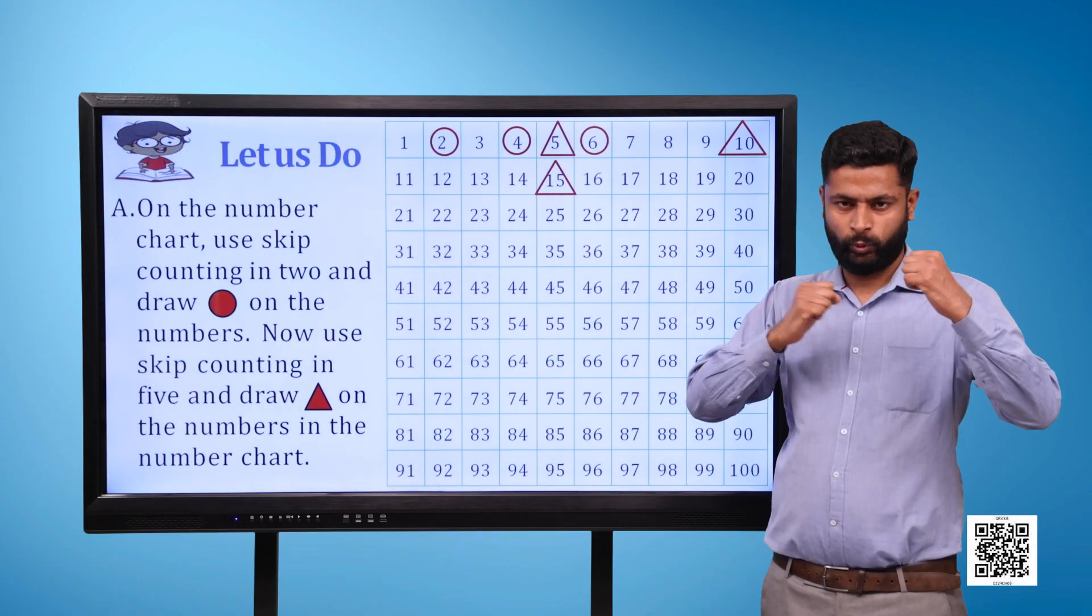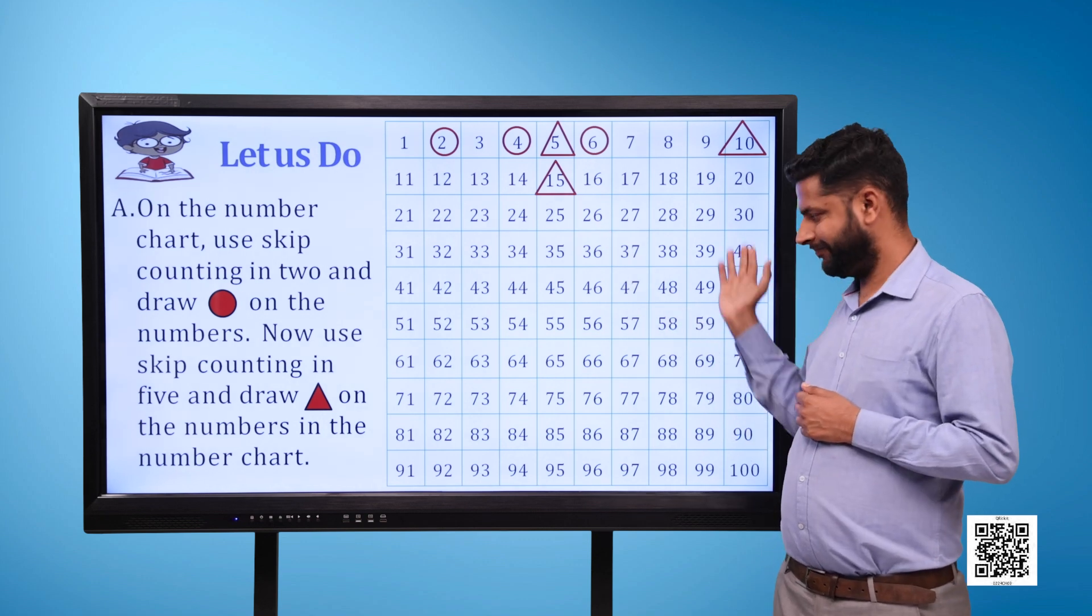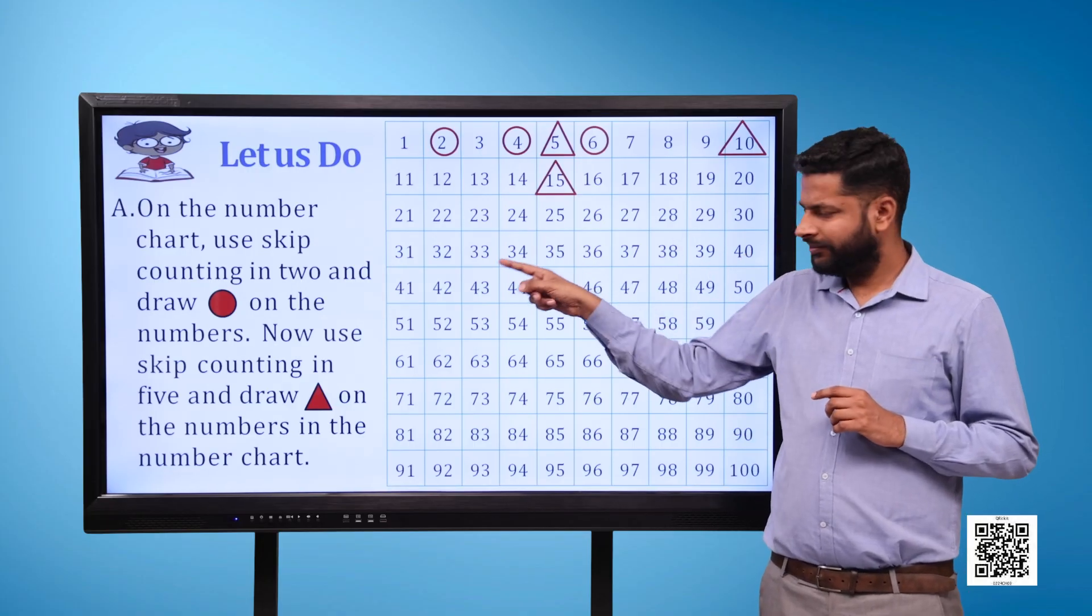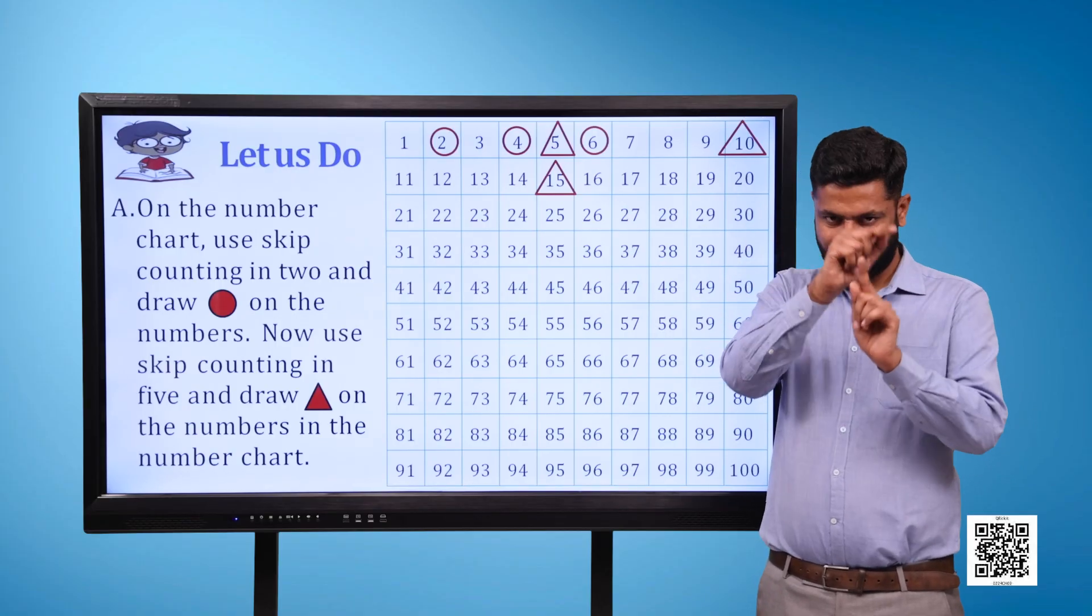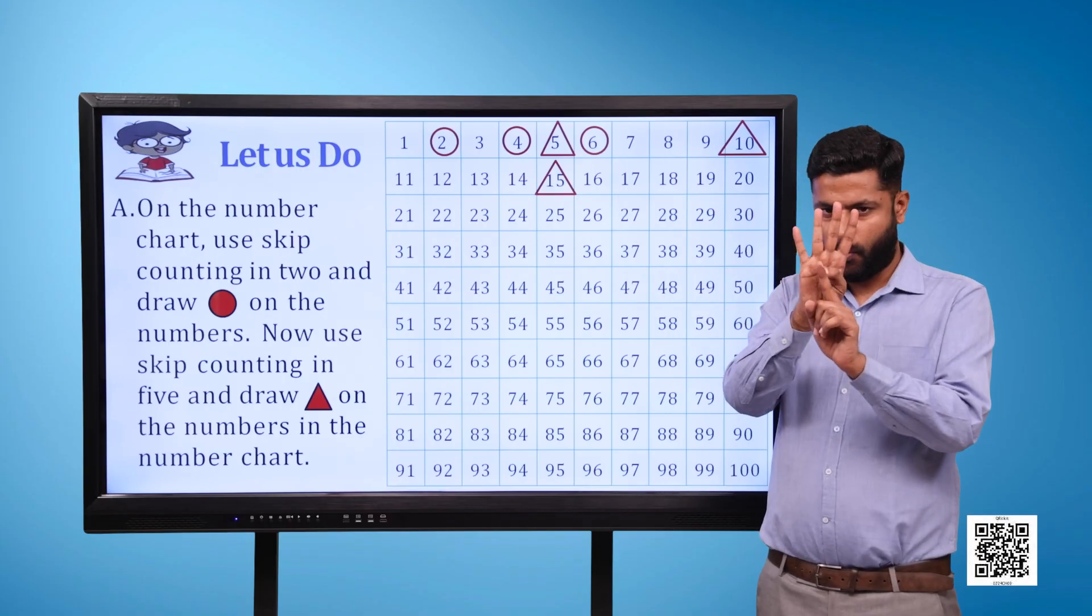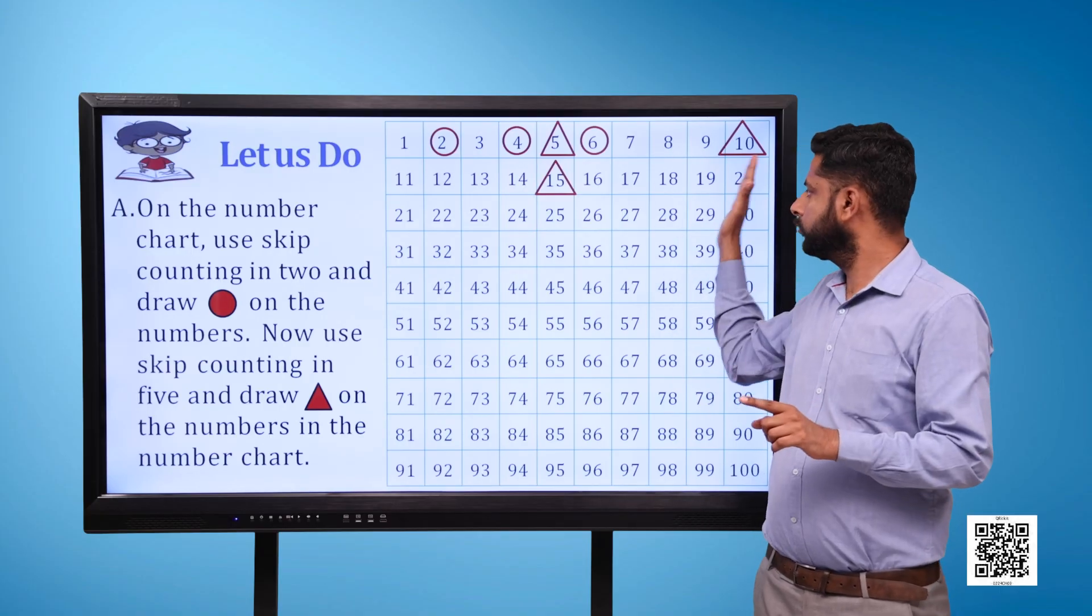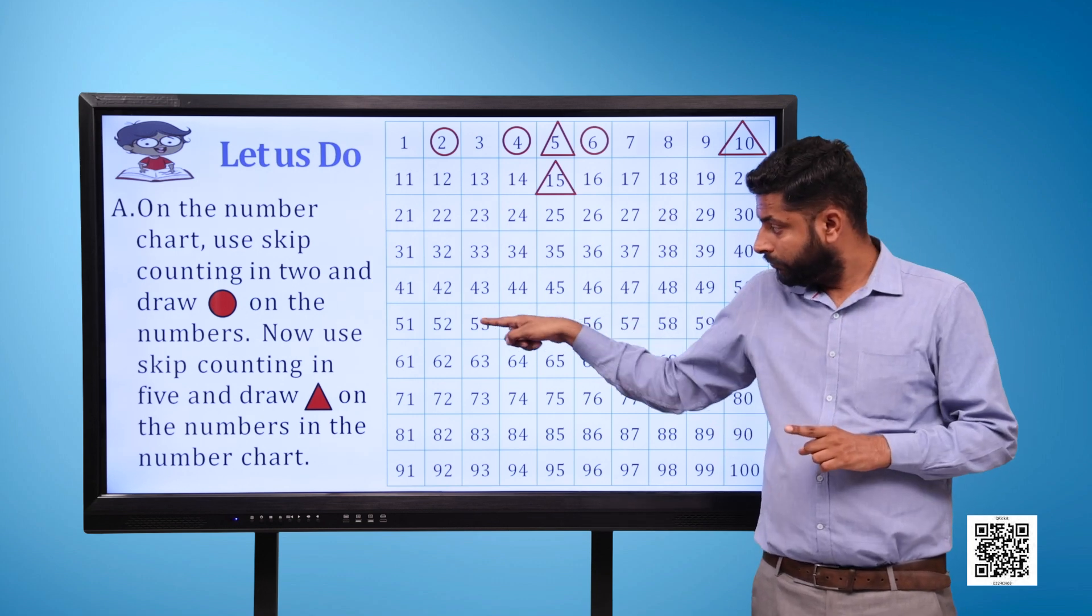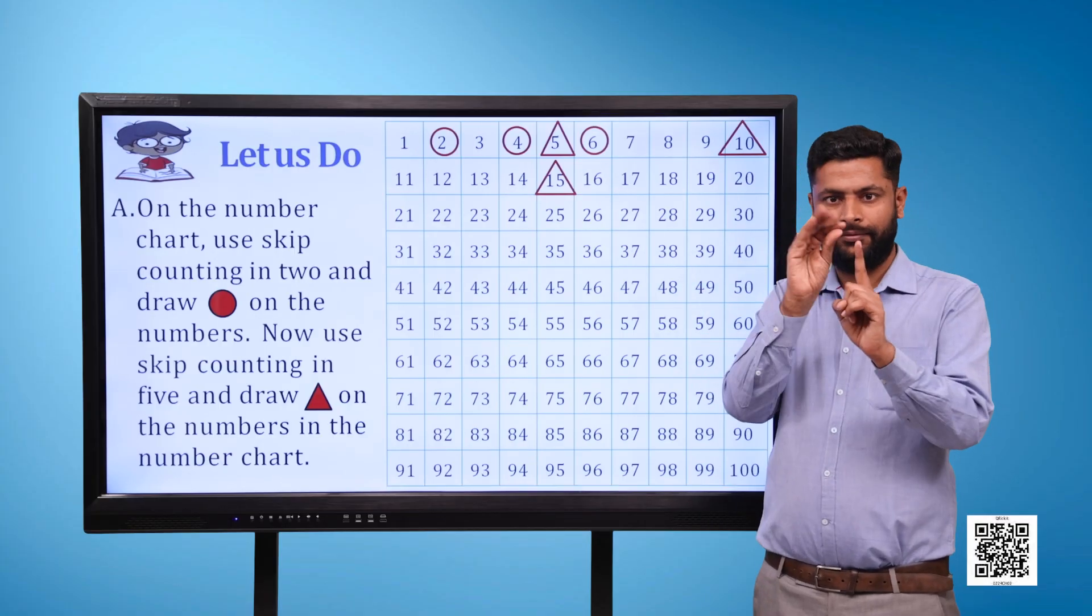On the number chart, use skip counting in 2 and draw circle on the numbers.